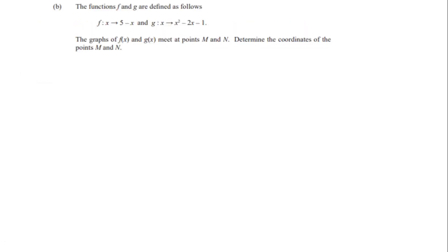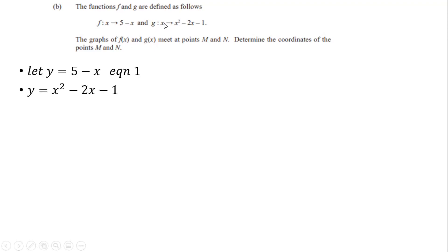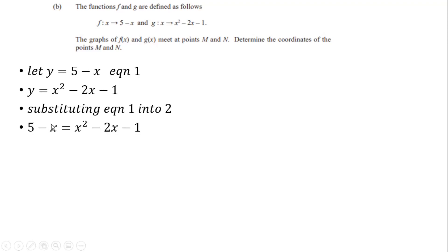Part b says the functions f and g are defined as f(x) = 5 − x and g(x) = x² − 2x − 1. The graphs of f(x) and g(x) meet at points M and N — determine the coordinates of M and N. We let y = 5 − x as equation 1 and y = x² − 2x − 1 as equation 2, then solve using simultaneous equations by substituting equation 1 into equation 2.